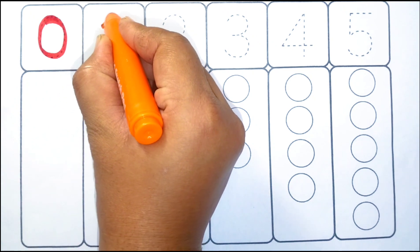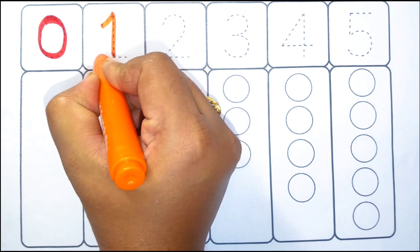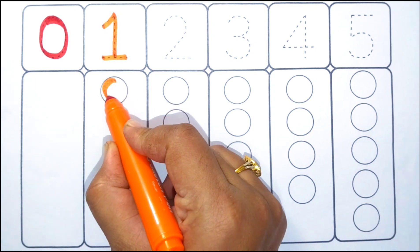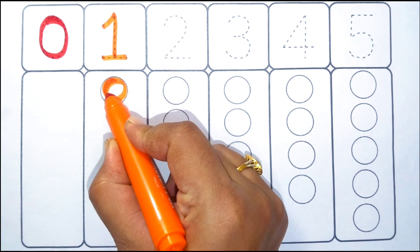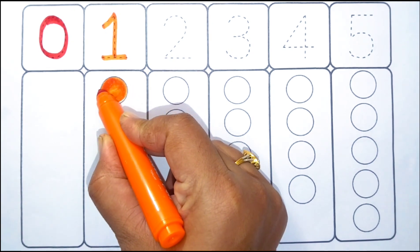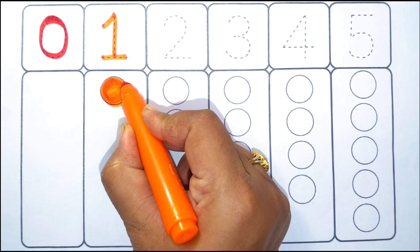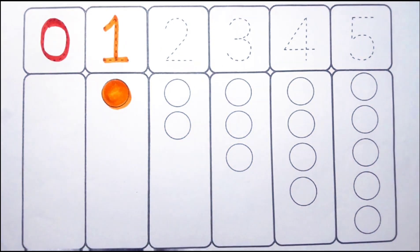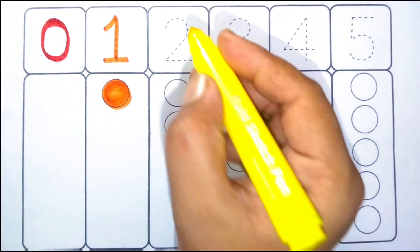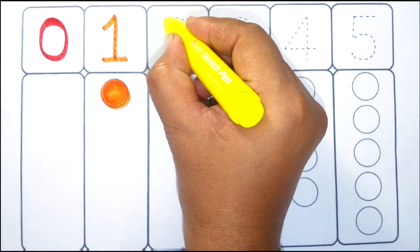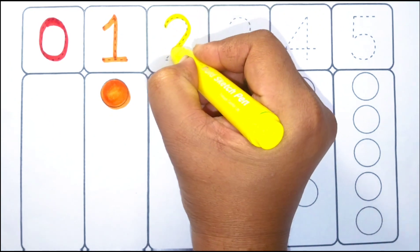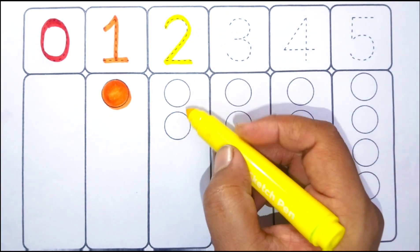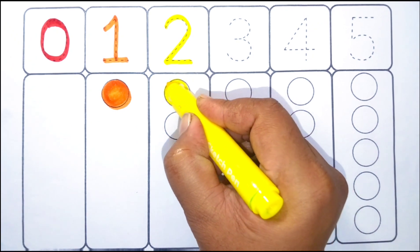One. One circle. One. Yellow color. Two. One. Two circle. Yellow color.